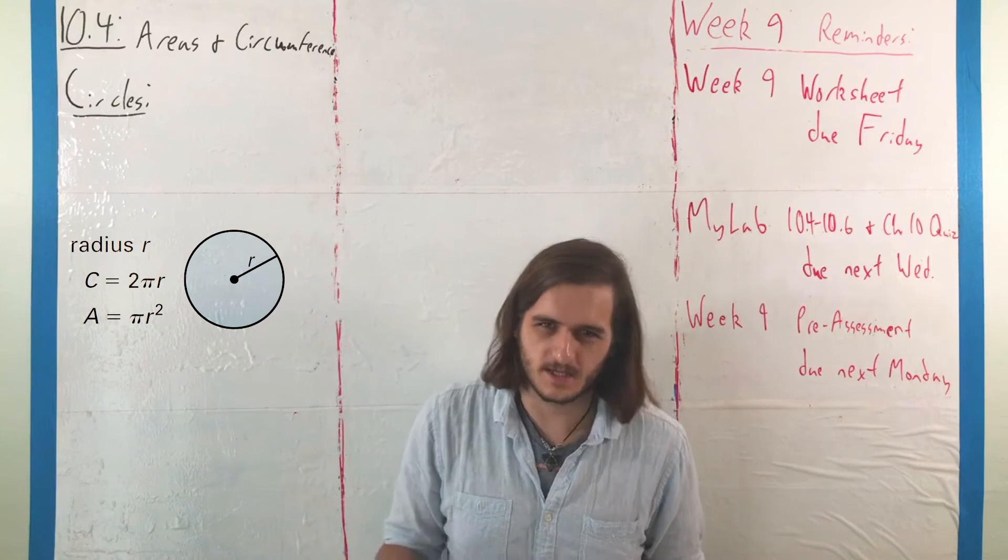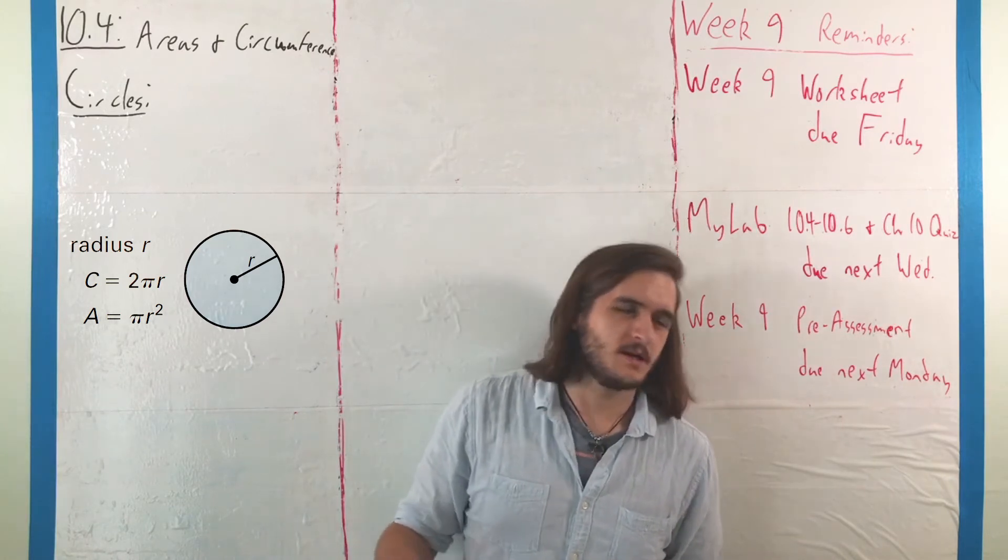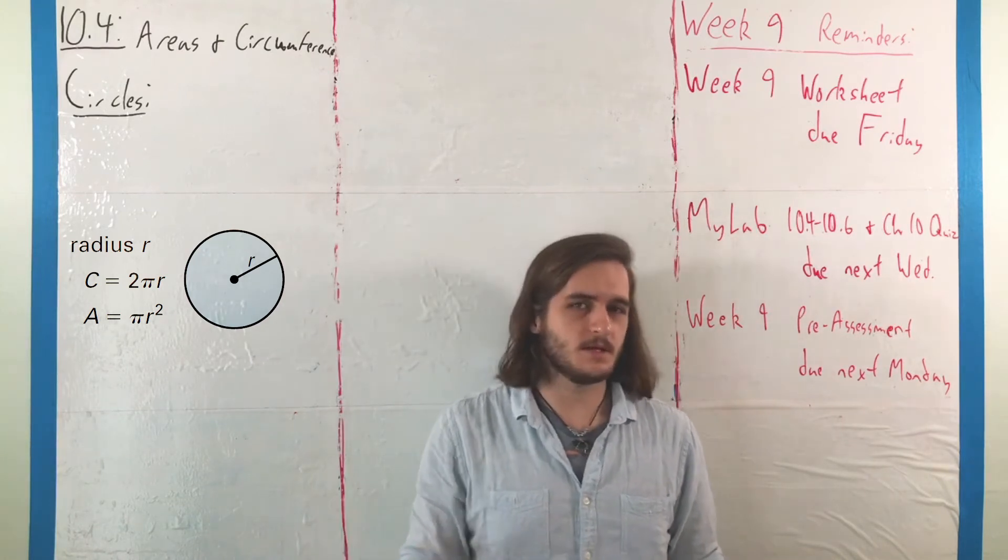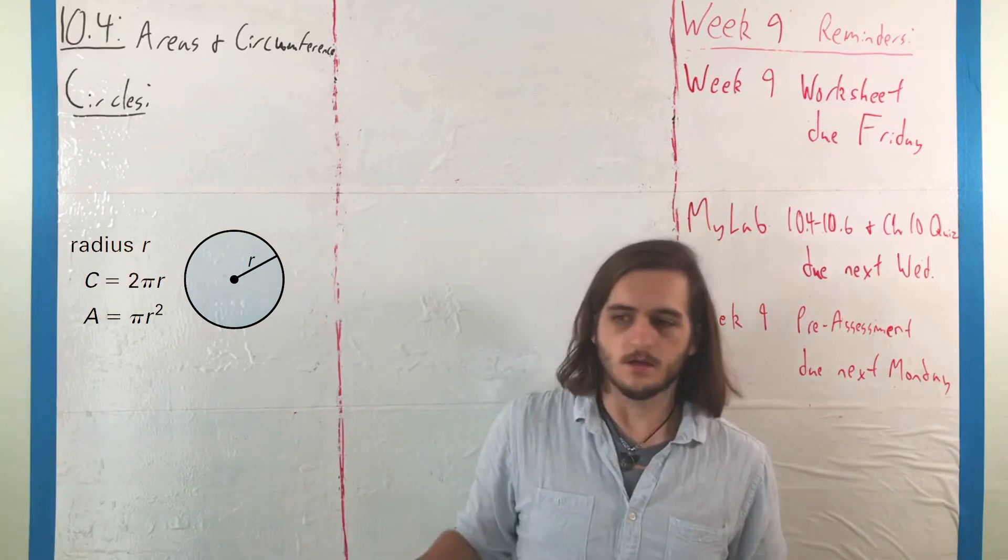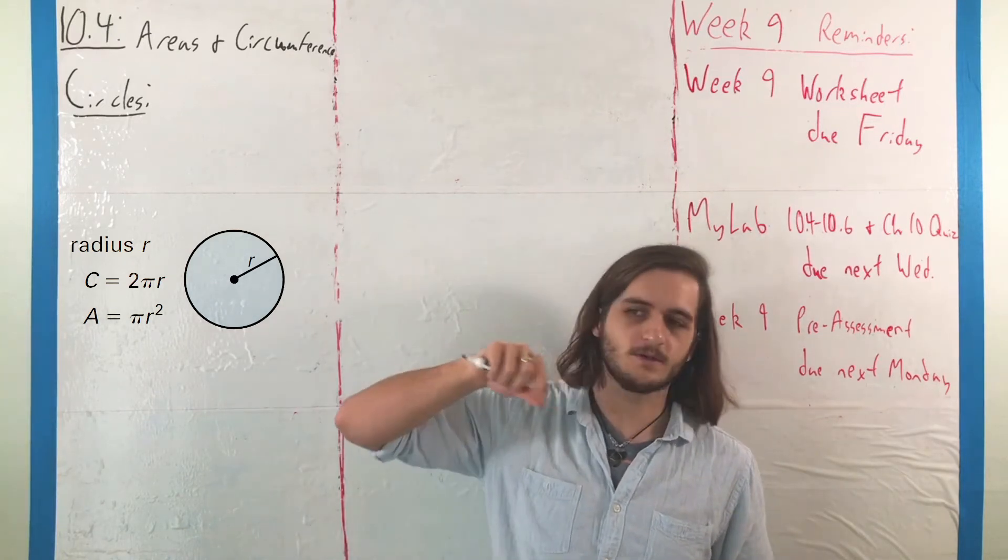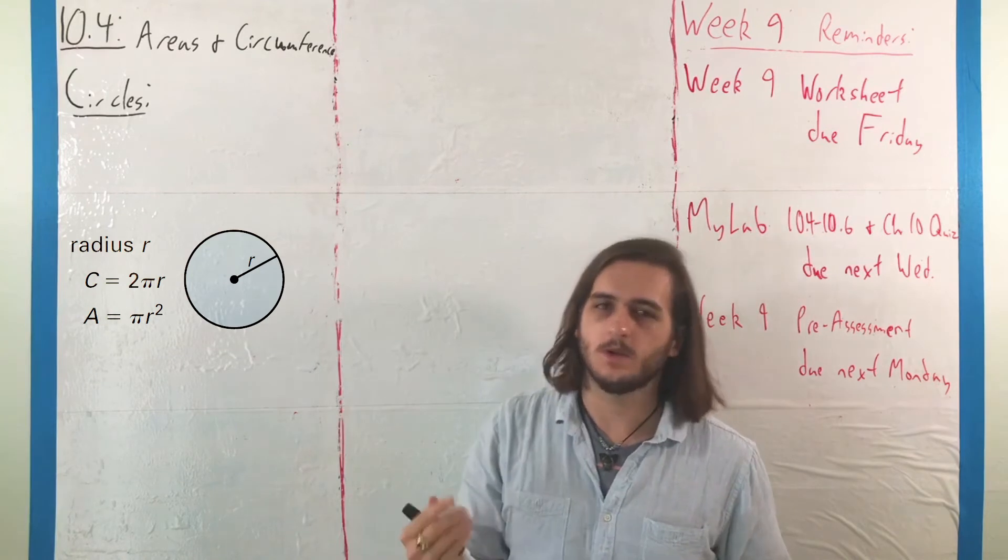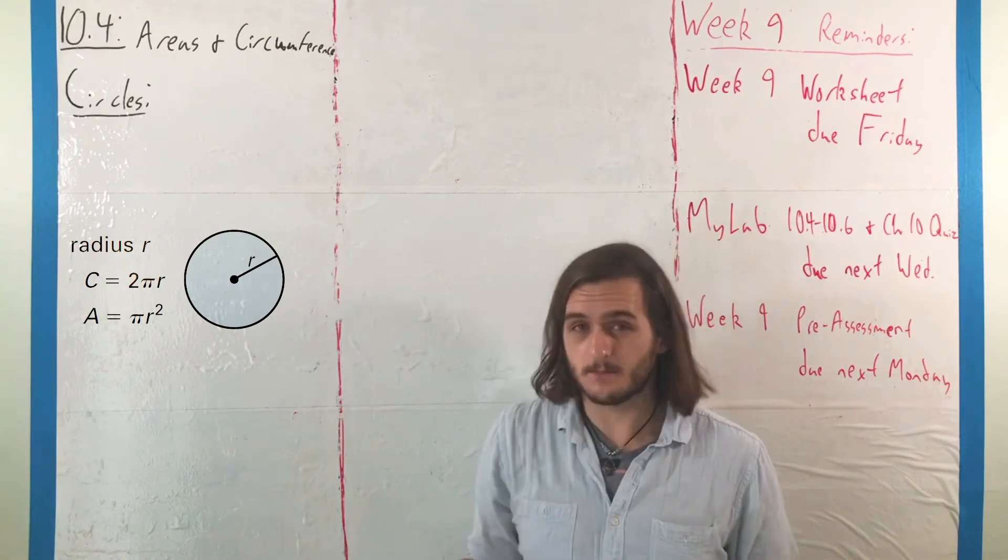But it sort of fits in the same kinds of patterns, except because we don't have those nice segmented pieces. When we talk about the length of the outside, you don't really get perimeter. We instead get that idea of circumference.